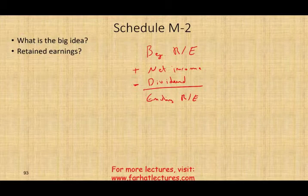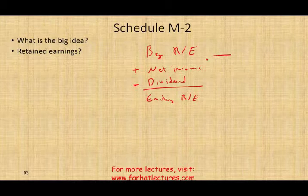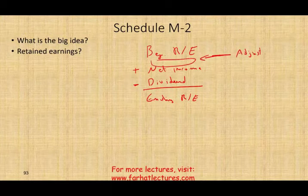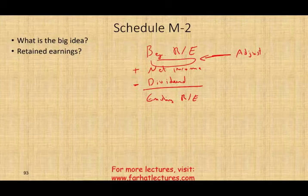What is the IRS looking for? This is about reconciling your beginning retained earnings and ending retained earnings. What they're really looking for is whether you made any adjustments to retained earnings — for example, if you adjust beginning retained earnings, it means there was either an error or misapplication of an accounting rule. They want to know if there was an adjustment, and they also want your reconciliation.